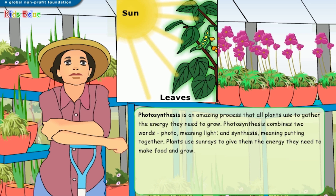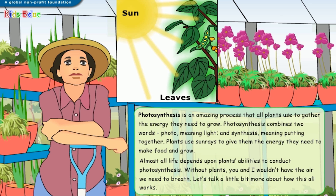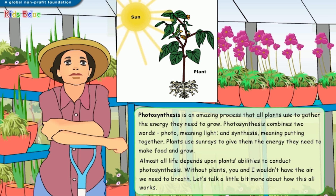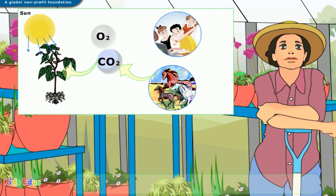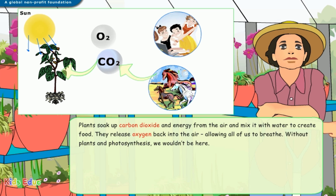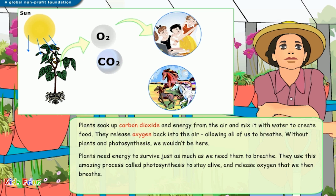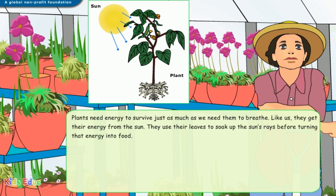Plants use sun rays to give them the energy they need to make food and grow. Almost all life depends upon plants' abilities to conduct photosynthesis. Without plants, you and I wouldn't have the air we need to breathe. Plants soak up carbon dioxide and energy from the air and mix it with water to create food. They release oxygen back into the air, allowing all of us to breathe. Without plants and photosynthesis, we wouldn't be here. Plants need energy to survive just as much as we need them to breathe. Like us, they get their energy from the sun. They use their leaves to soak up the sun's rays before turning that energy into food.